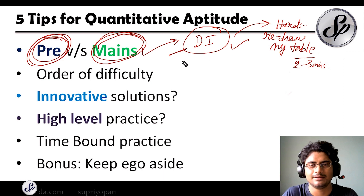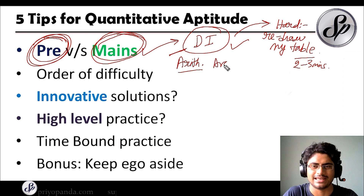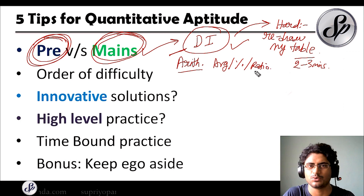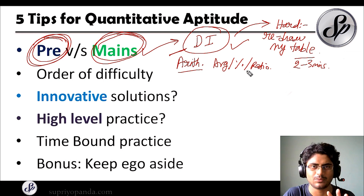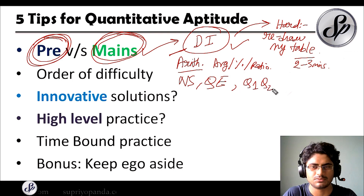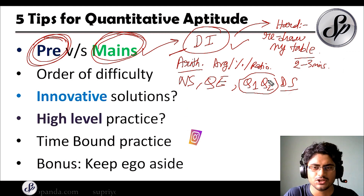After data interpretation, I would go for some arithmetic questions. For arithmetic, you have to pick and choose — there are easy ones like averages, percentages, and ratios, so go and attack those after the DI section. If the arithmetic seems too difficult, you can go for the number series, quadratic equations, or quantity-one-quantity-two type data sufficiency questions. You have to calibrate your approach accordingly.